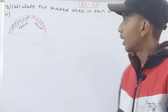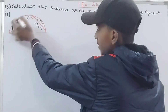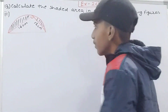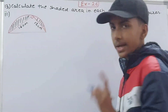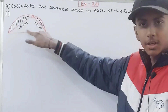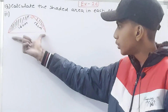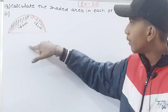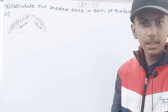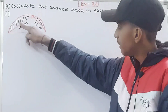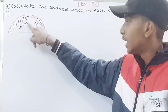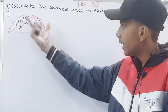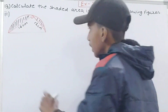Let's move on to the next part. In part two you can see we have one complete semicircle and a triangle. First I will calculate the length of the hypotenuse of this right angle triangle — this is the height, this is the base, and the side opposite to both is the hypotenuse. Then I will calculate the area of the semicircle minus the area of the triangle, because the shaded part is the semicircle with the triangle cut away from it.